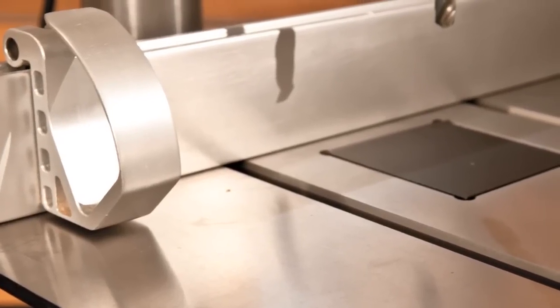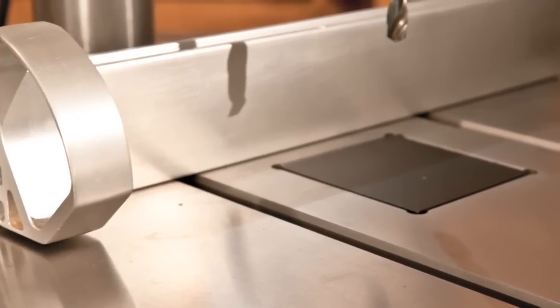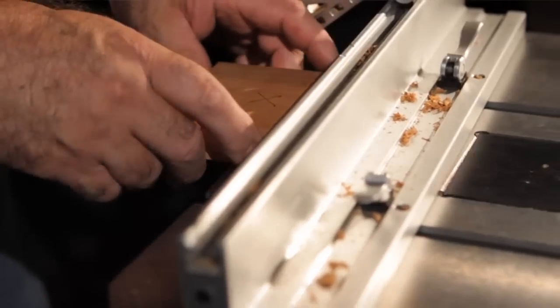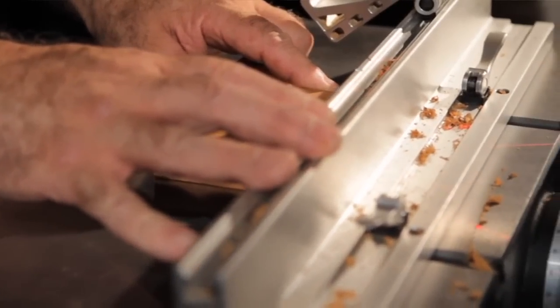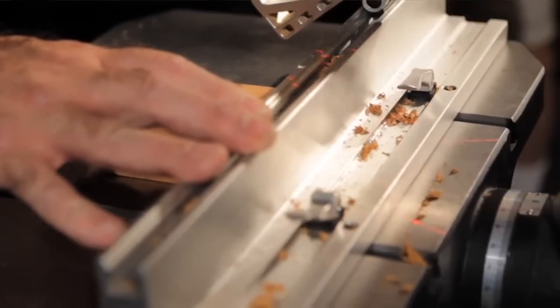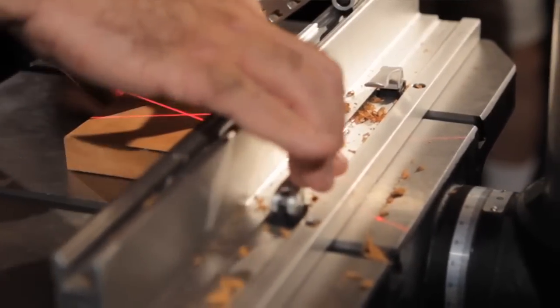Powermatic makes great fences for all of their machines, and the fence on the PM2800B is no exception. What I love about this fence is that it's adjustable so that you can easily align a 90 degree angle between the fence and the table. This makes aligning the stock quick and easy.